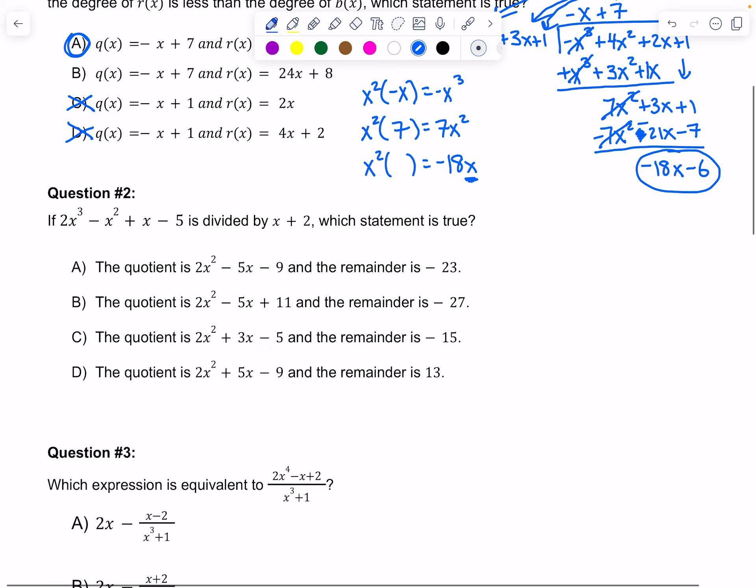Let's look at question 2. If 2x cubed minus x squared plus x minus 5 is divided by x plus 2, which statement is true? In this problem our divisor is linear, so we can do long division, synthetic division, or synthetic substitution. I'm going to do synthetic division and synthetic substitution to show you both.